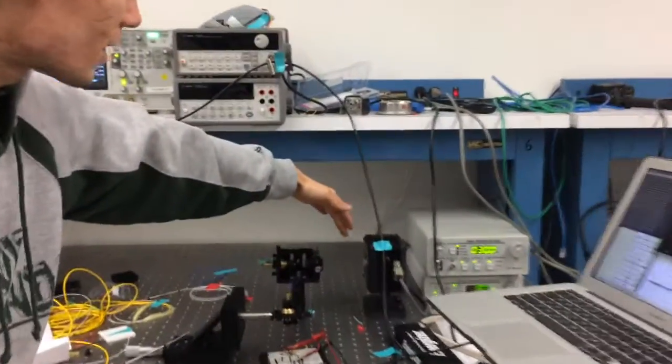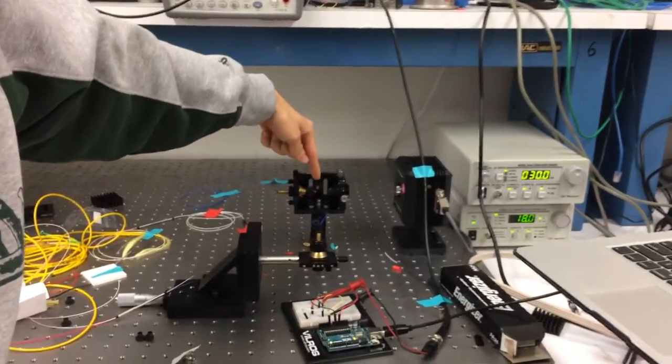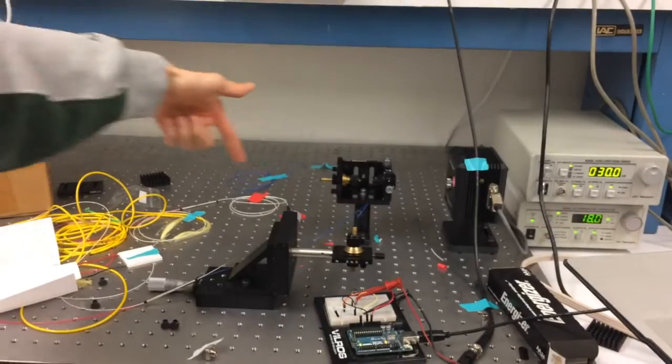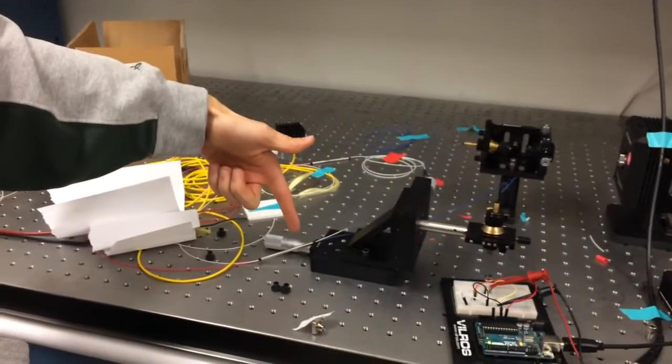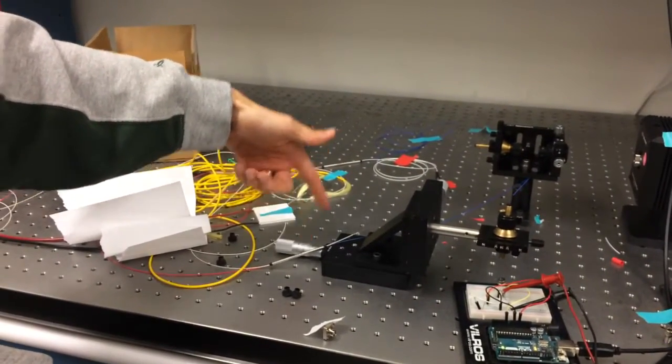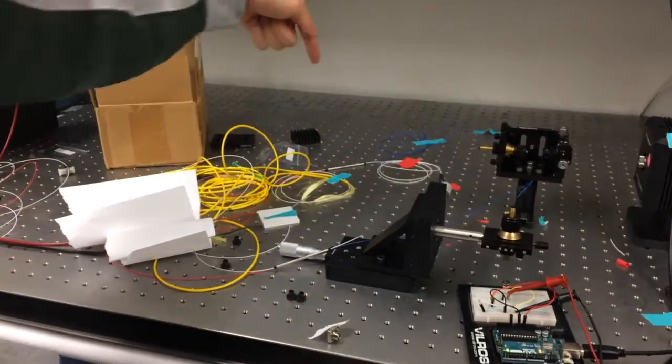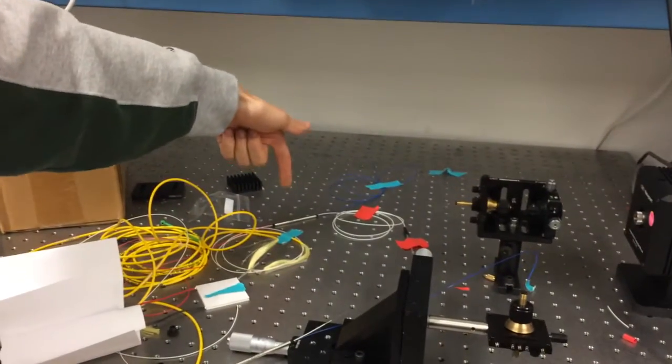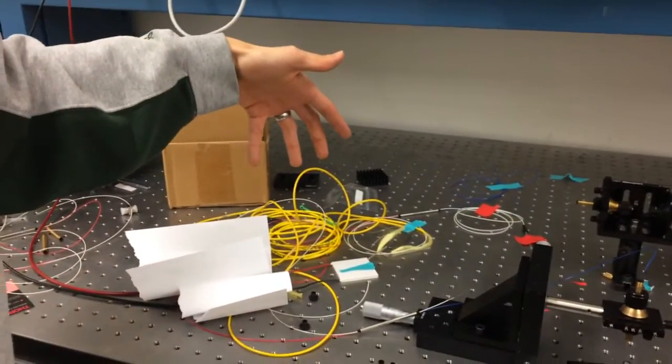So we have a laser here that's coming and being coupled into a fiber, an optical fiber. This fiber then goes and goes through two 50-50 beam splitters. So one is here and the other one is back here. And in between them you have a Mach-Zehnder interferometer.